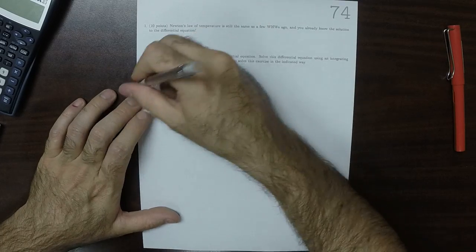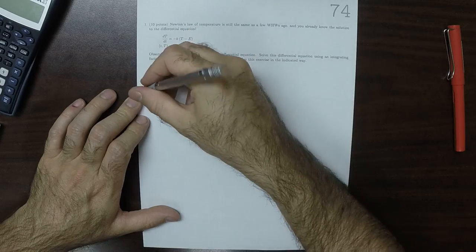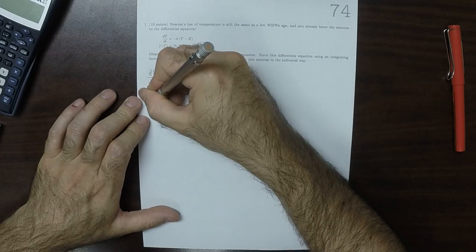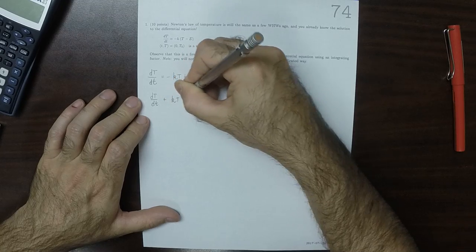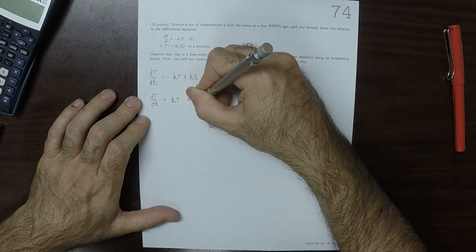So moving the big T part to the other side, D big T, D little t plus K big T is ke.